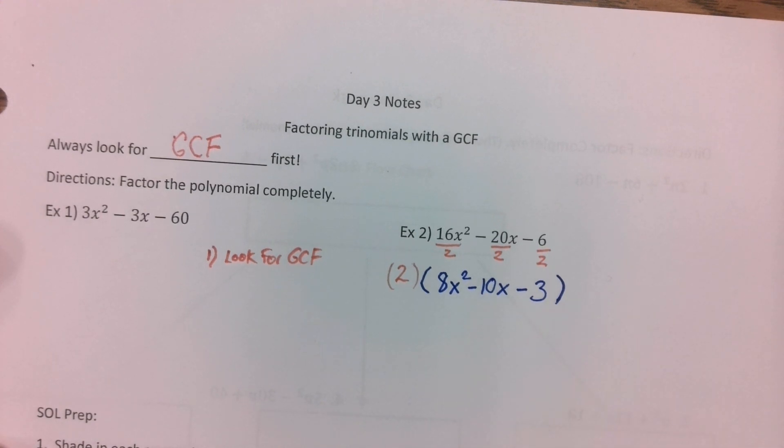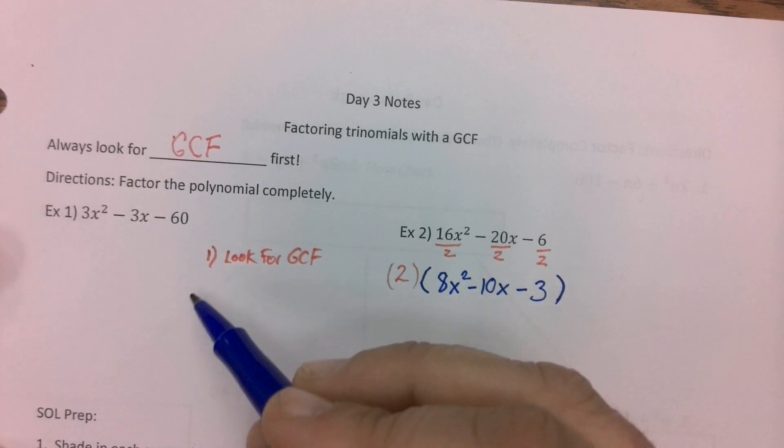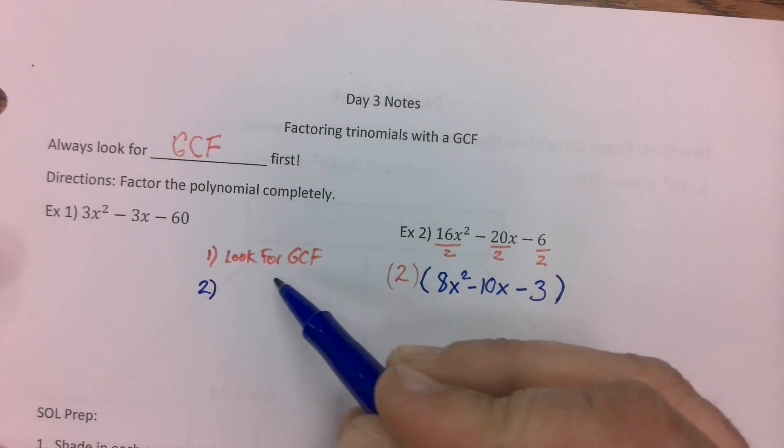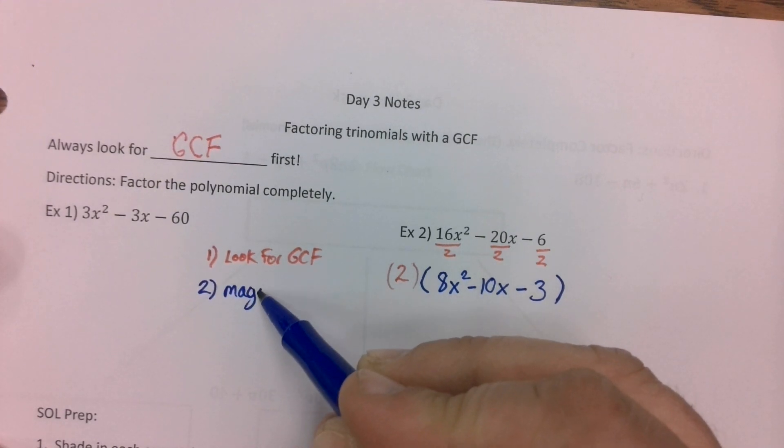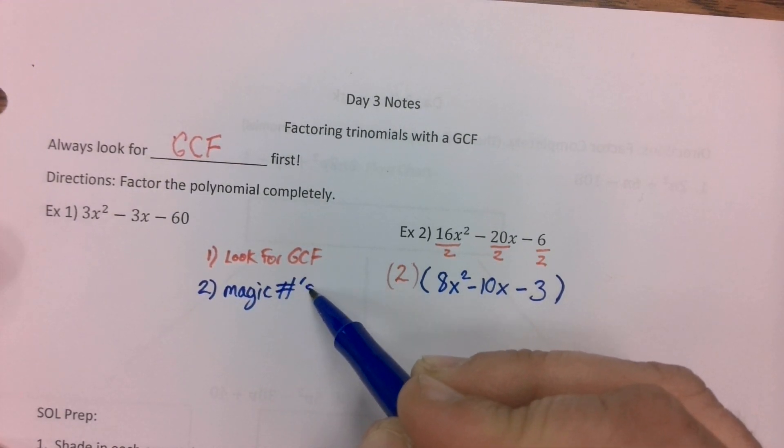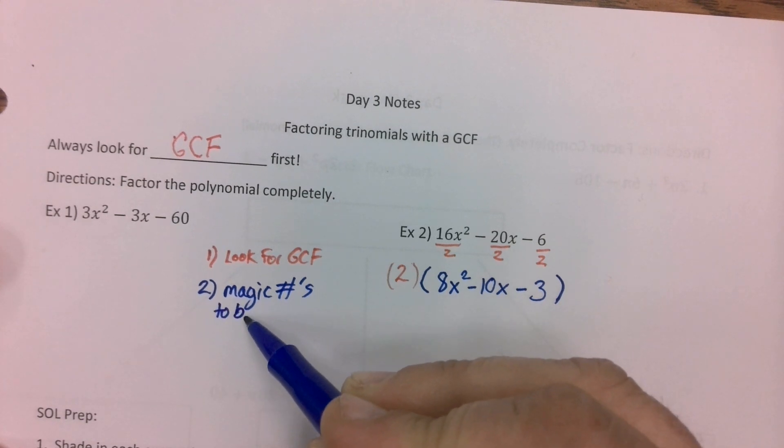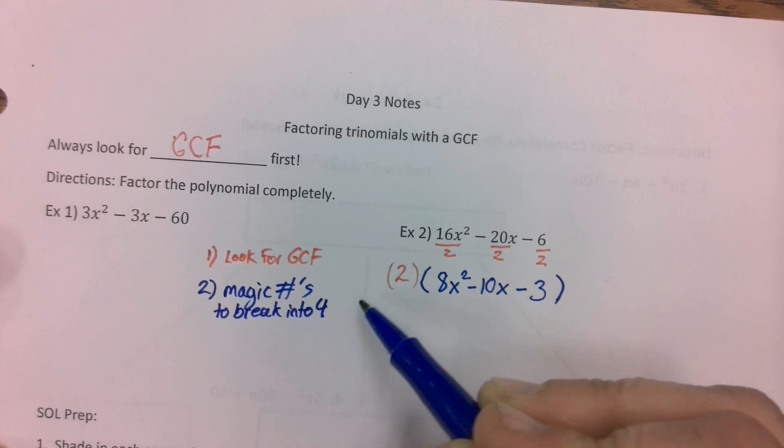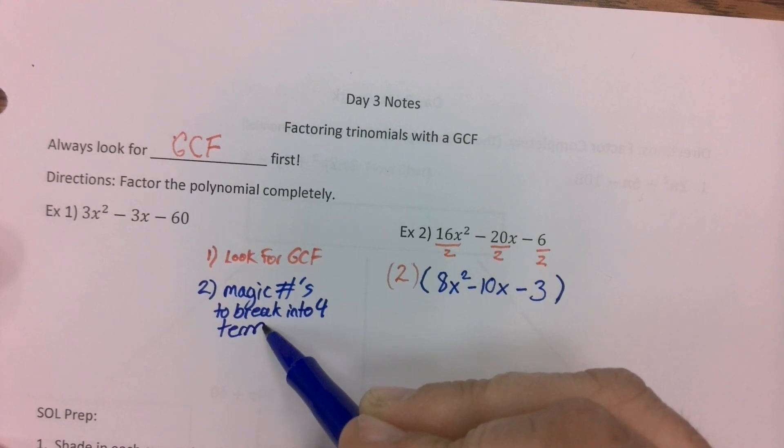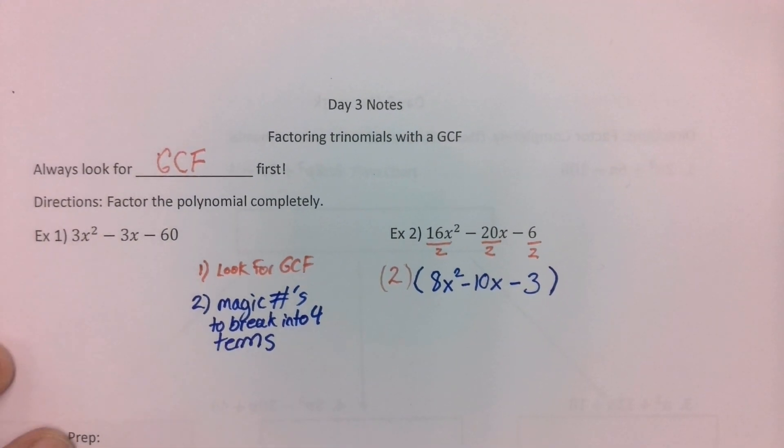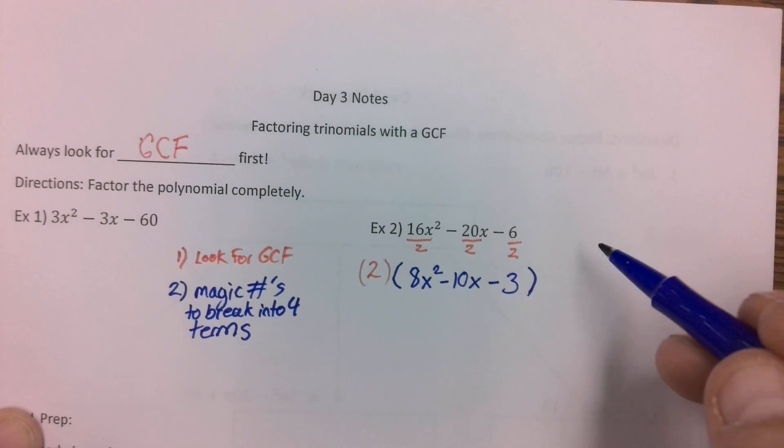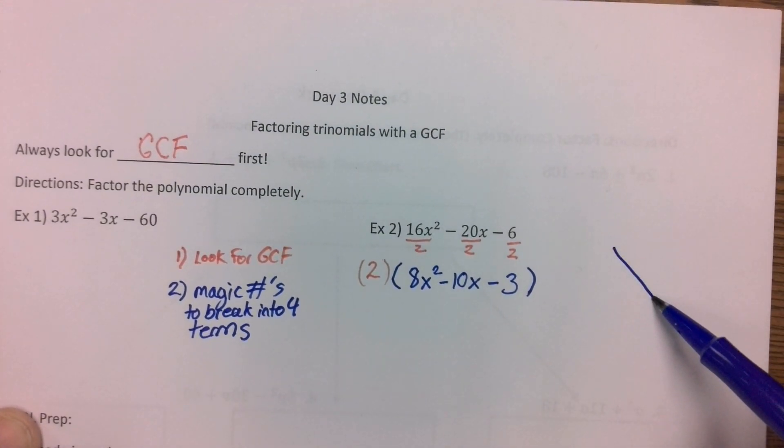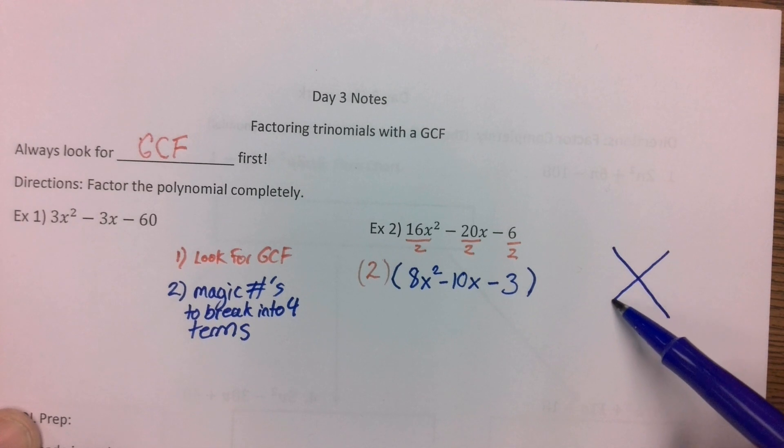So all of our next steps are from our previous day 2 where we're looking for magic numbers to find our trinomial. Magic numbers to break into 4 terms. We need 4 terms to put them in a box in order to factor by grouping. So let's see what numbers we can make work.